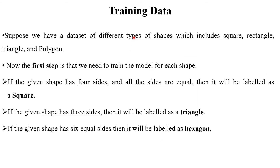The first step is to train the data. You need to pass a labeled input data set as input to the machine. Suppose we have a dataset of different types of shapes — square, rectangle, triangle, and polygon. In the training data set, the machine is trained using their features. For example, if a shape has four sides and all sides are equal, it is labeled as a square. If it has three sides, it is labeled as a triangle. If it has six equal sides, it is labeled as a hexagon. The features are mapped with the particular labels — this is called the training data set.